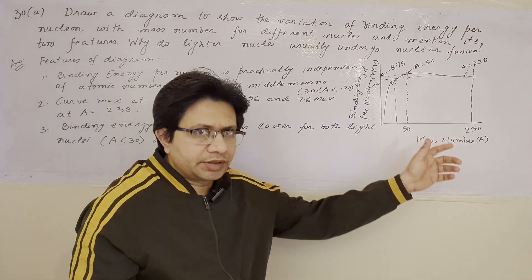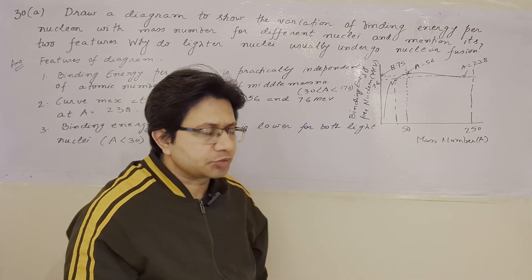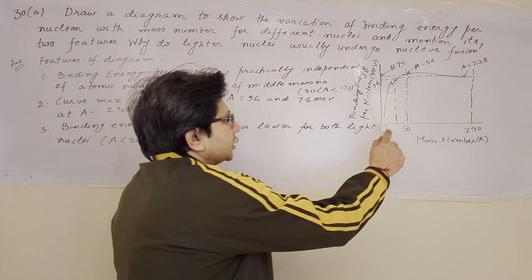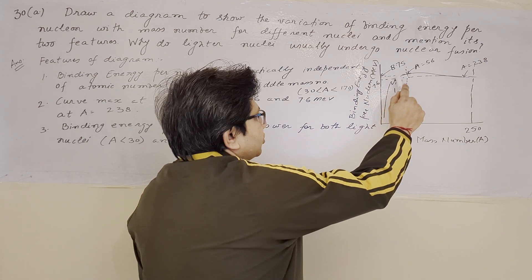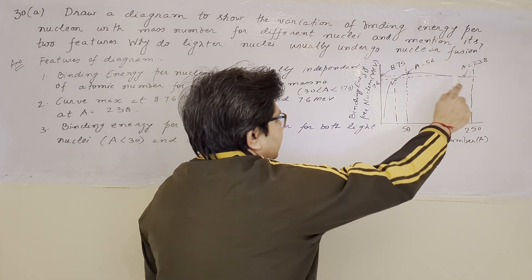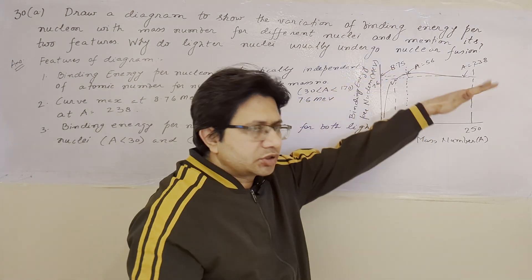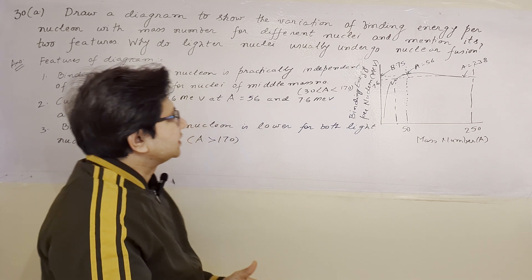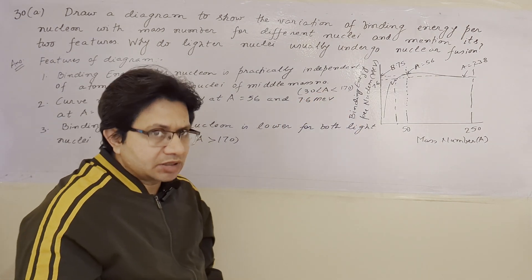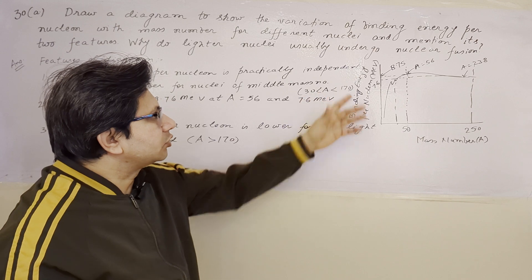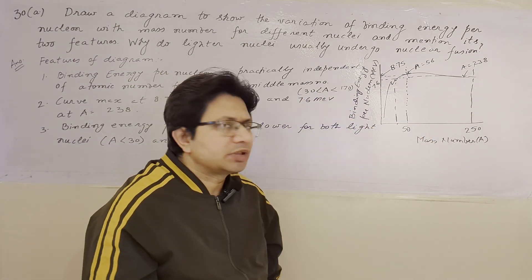To summarize: we draw the diagram showing binding energy per nucleon versus mass number. The diagram shows that as mass number increases, the binding energy per nucleon increases and at a certain stage it saturates and is slightly down. In the range of mass numbers 30 to 170, the binding energy per nucleon is independent of the atomic number.